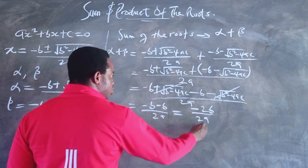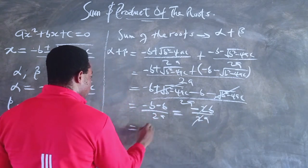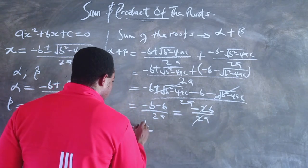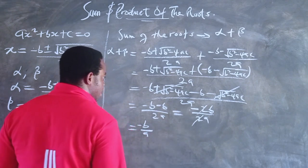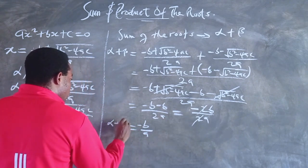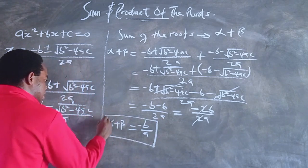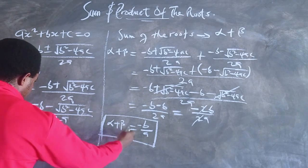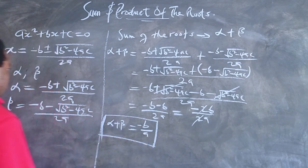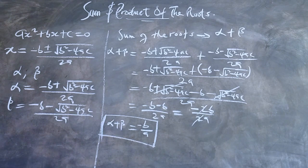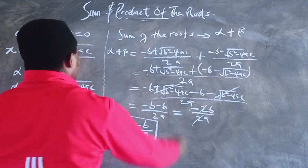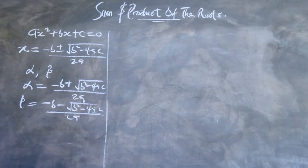So we have -2b over 2a. The 2 cancels out, giving us -b/a. Therefore, the sum of the roots is -b/a. If we are told to find the sum of the roots, we simply identify the coefficient b and the leading coefficient a, apply this formula, and obtain the sum without having to solve the quadratic equation. This saves us a lot of time.